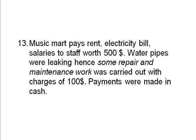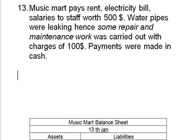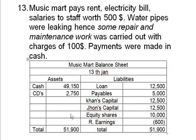Transaction 13: MusicMart pays rent, electricity bills, and salaries to staff worth $500, plus repair and maintenance for leaking water pipes worth $100, all paid in cash. This illustrates the running costs of the company. The total cost incurred is $500 plus $100, which is $600. Since payments are made in cash, the cash account reduces by $600. The question is where this $600 gets balanced in the balance sheet.